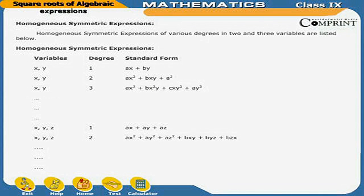Homogeneous symmetric expressions of various degrees in two and three variables: for variables x and y, degree 1: ax + by; degree 2: ax² + bxy + ay²; degree 3: ax³ + bx²y + bxy² + ay³. For variables x, y, z, degree 1: ax + ay + az; degree 2: ax² + ay² + az² + bxy + byz + bzx.